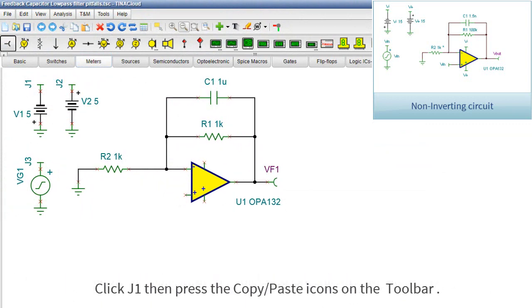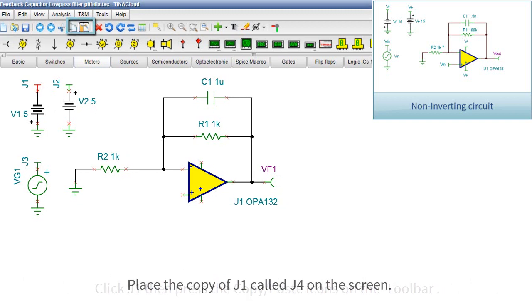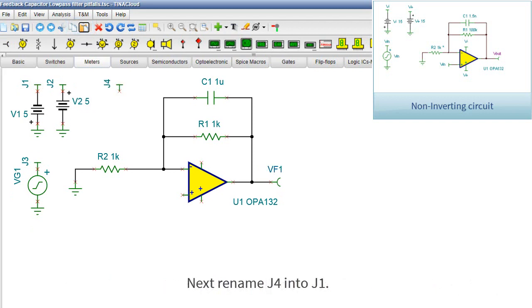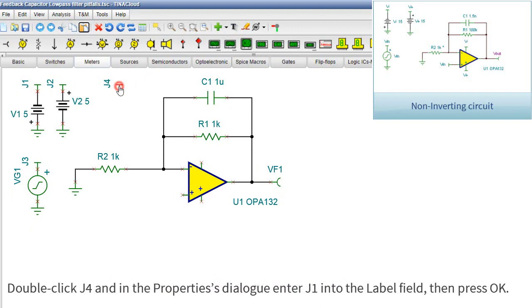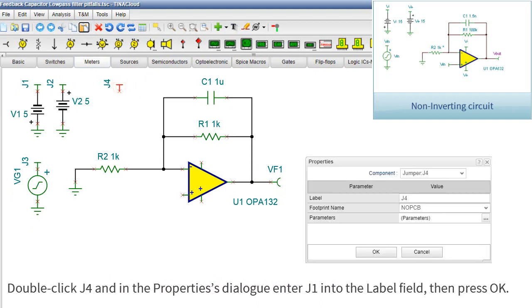Click J1, then press the copy-paste icons on the toolbar. Place the copy of J1 called J4 on the screen. Next, rename J4 into J1. Double-click J4, and in the Properties dialog, enter J1 into the Label field, then press OK.